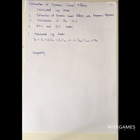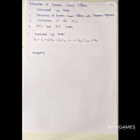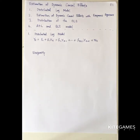In this video, we'll talk about the estimation of dynamic causal effects. First, we'll talk about the distributed lag model. Second, we'll talk about the estimation of dynamic causal effects with exogenous regressors. Third, we'll talk about the distribution of the OLS in this case. Finally, we'll take a look at the ADL model and GLS model to see how to modify the problem of serial correlation of error terms. Let's get started.